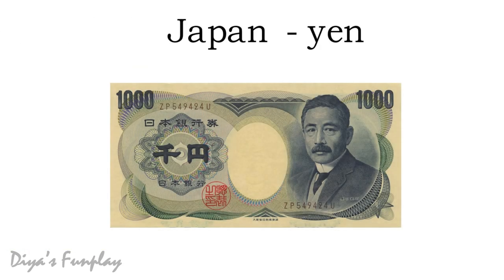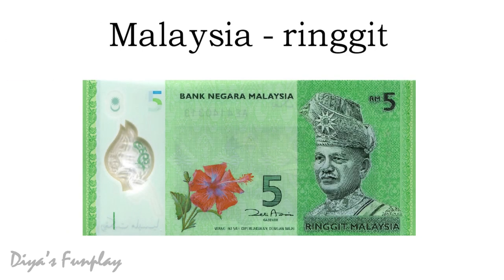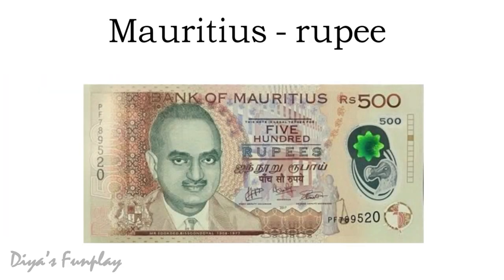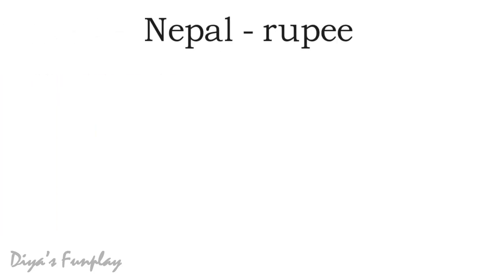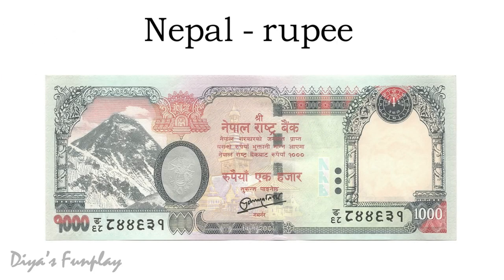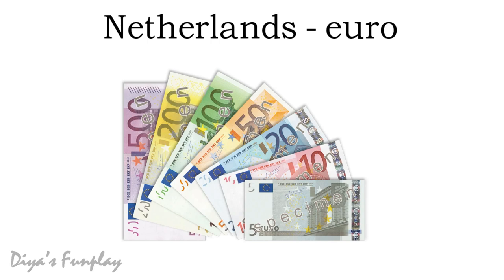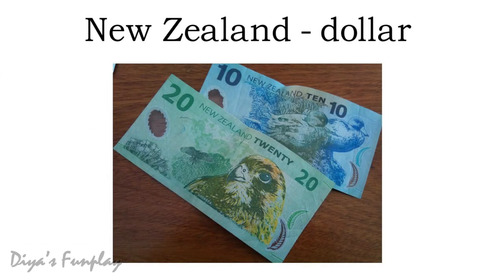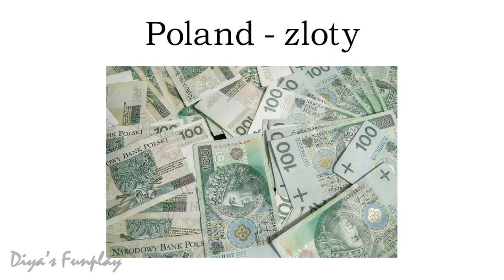Japan: Yen. Kuwait: Dinar. Malaysia: Ringgit. Mauritius: Rupee. Mexico: Peso. Nepal: Rupee. Netherlands: Euro. New Zealand: Dollar. Poland: Euro.